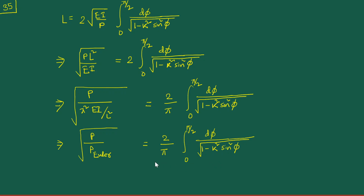That particular expression is actually giving us the critical load — not merely because we expressed it as a ratio of P over P_Euler, but because we now have a recipe for finding k. And k is nothing but sin(α/2), so k = sin(α/2). Please don't forget that we are working under the condition that α > 0. Given a particular value of P, we are able to find out the value of k.